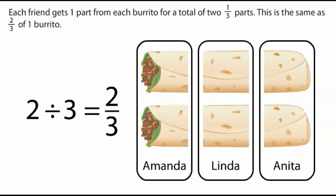Each friend gets one part from each burrito for a total of two one-third parts. This is the same as two-thirds of one burrito.